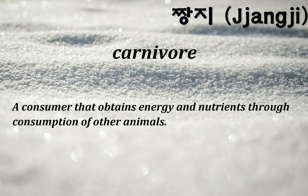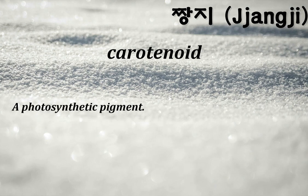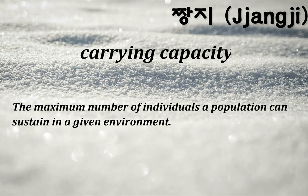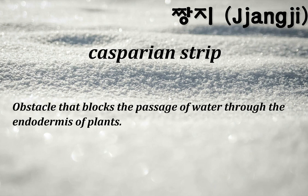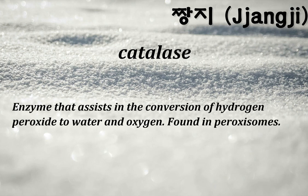Carnivore: a consumer that obtains energy and nutrients through consumption of other animals. Carotenoid: a photosynthetic pigment. Carrying capacity: the maximum number of individuals a population can sustain in a given environment. Casparian strip: obstacle that blocks the passage of water through the endodermis of plants. Catalase: enzyme that assists in the conversion of hydrogen peroxide to water and oxygen; found in peroxisomes.